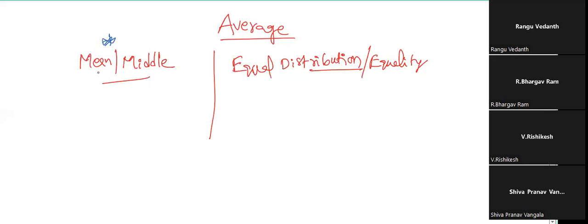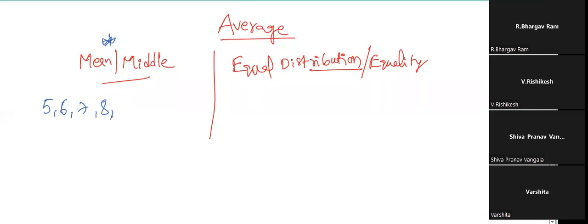Tell me the average for these numbers: 5, 6, 7, 8, 9. So seven. Seven is the average because it is in the middle.